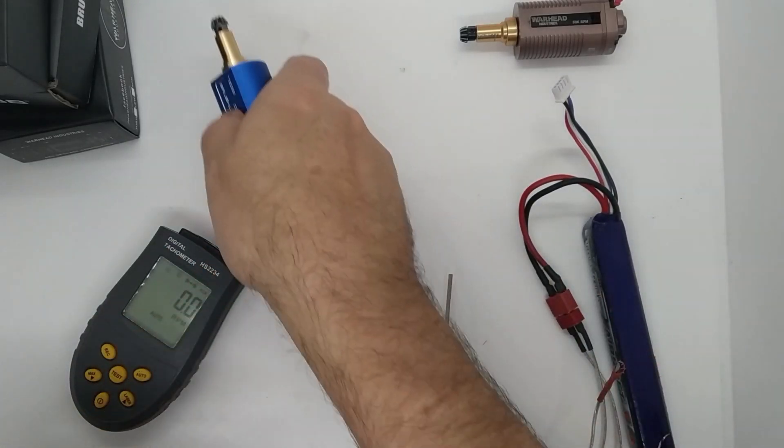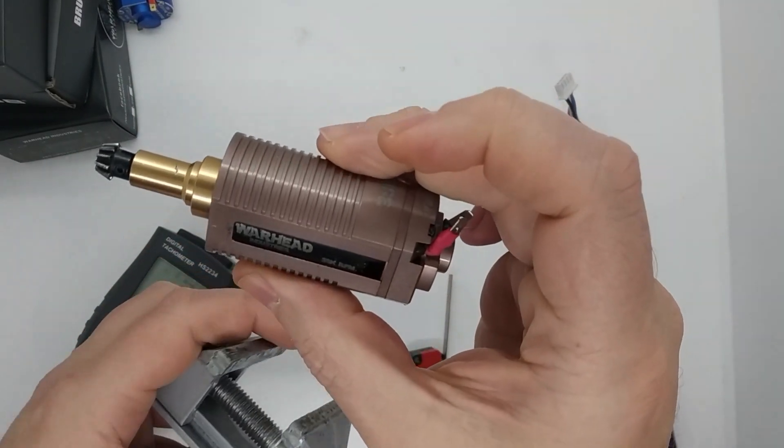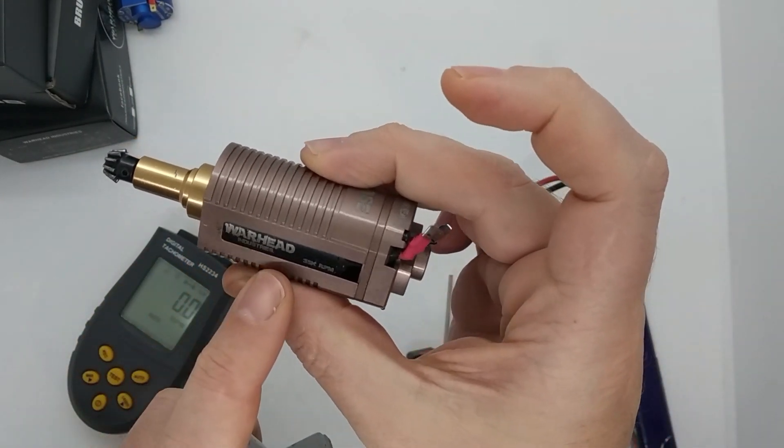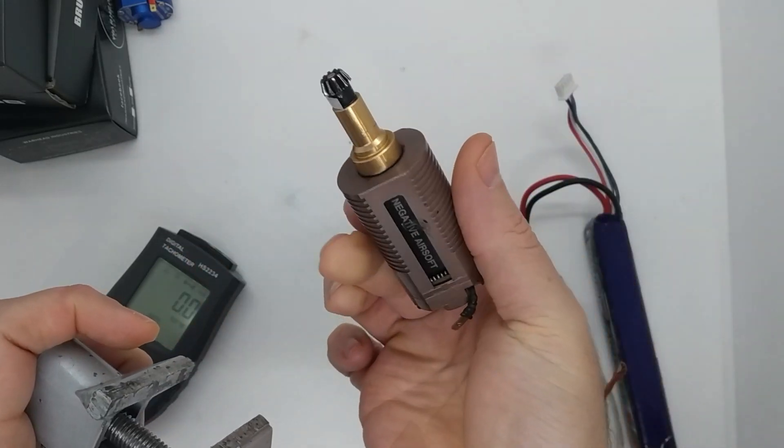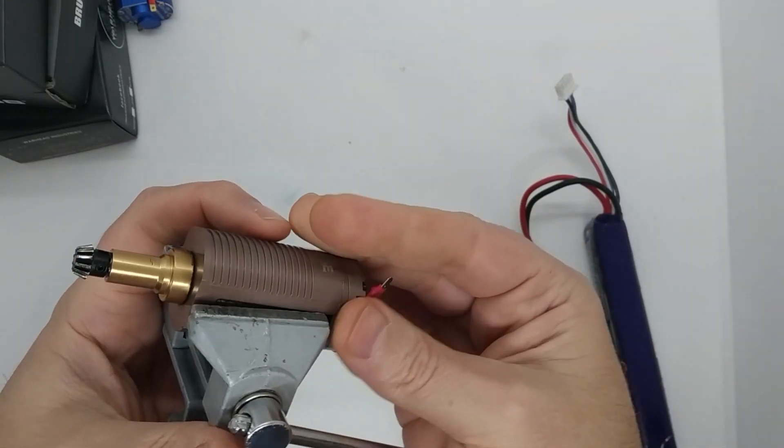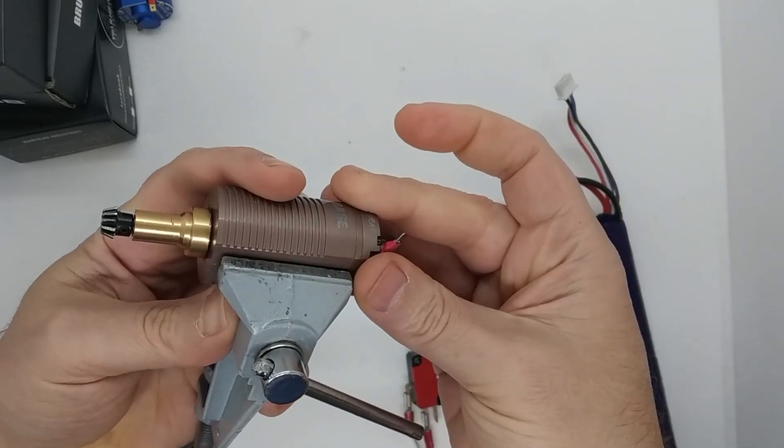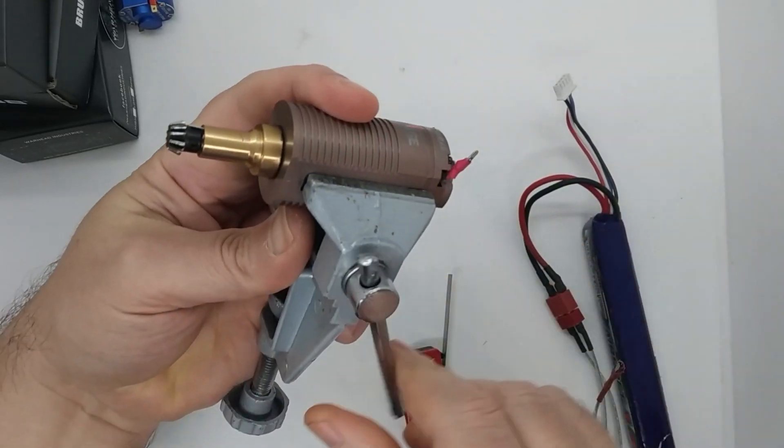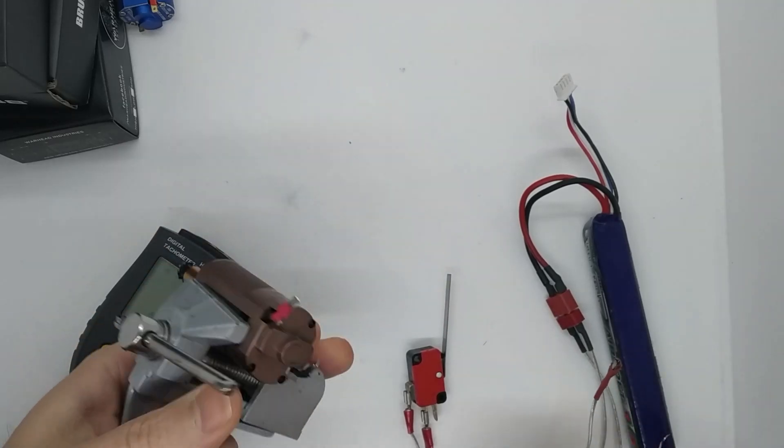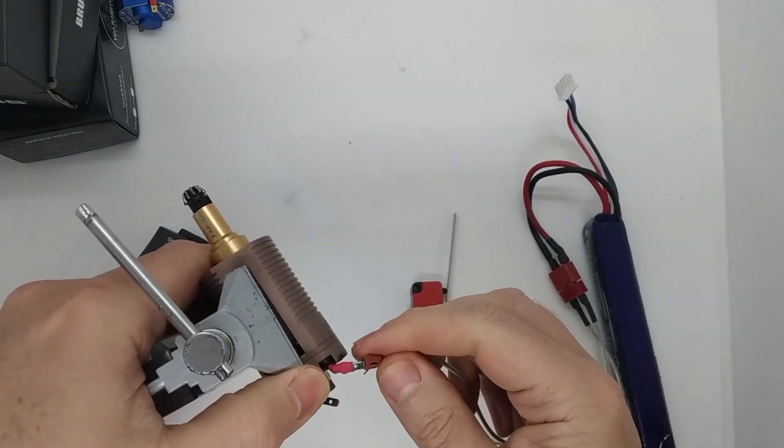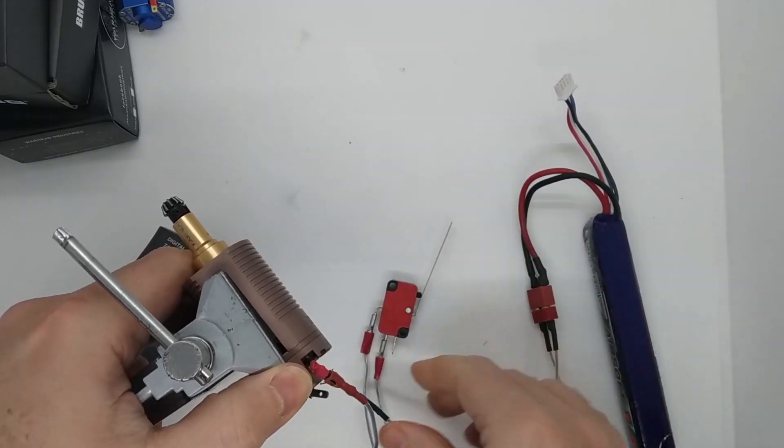So the last motor we've got here, let's take that out, is this Warhead. And this is a 35k RPM one. So let's pop that in there, okay, let's tighten this one. I'm not entirely too sure which if this is a base or if this is a watt or whatever ones they do.